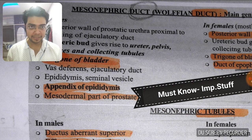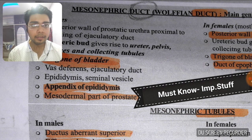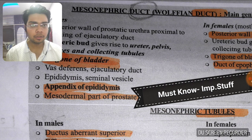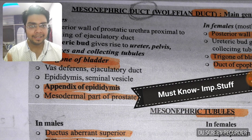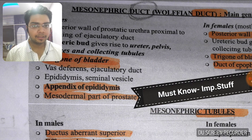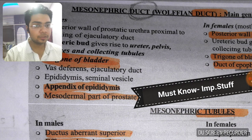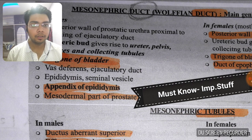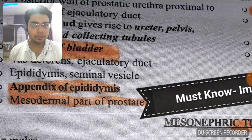In case of males, the main genitalia developed from the mesonephric duct include: posterior wall of prostatic urethra proximal to the ejaculatory duct opening, vas deferens, ejaculatory duct, epididymis, seminal vesicles, and appendix of epididymis. The appendix of testis develops from the paramesonephric duct. The mesodermal part of the prostate also develops from the mesonephric duct.